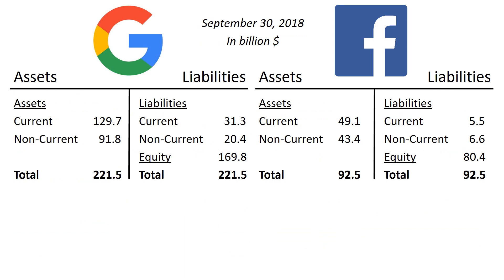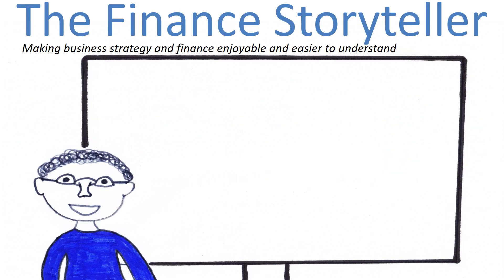In summary, this short review of Alphabet Inc.'s and Facebook's Q3 2018 ending balance sheets shows both are very financially healthy companies, with high scores on financial ratios such as current ratio and equity as a percentage of total balance sheet. Thank you for watching! If you enjoyed this explanation of how to read a balance sheet and how to perform a balance sheet analysis, please give it a thumbs up. Please subscribe to the Finance Storyteller YouTube channel.